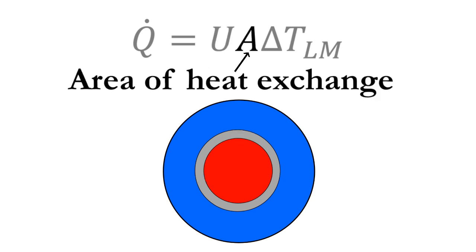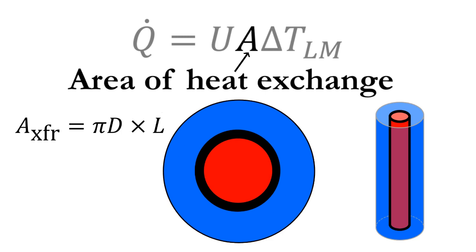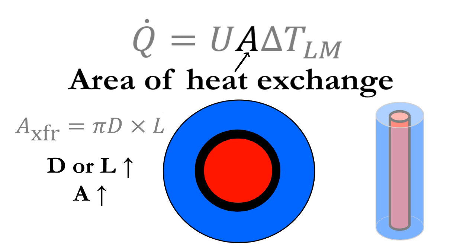A is the area over which heat is being exchanged. This is a surface area of the pipe, which is a function of the circumference and the length. If there is a longer pipe or a larger diameter, there will be a larger area for heat transfer. This results in a higher heat transfer rate.